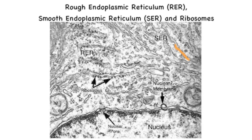Here we will identify eukaryotic cell structures from an electron micrograph. You can differentiate between the smooth endoplasmic reticulum and the rough endoplasmic reticulum because, although both are networks of tubules shown here in orange, the rough endoplasmic reticulum is associated with ribosomes, highlighted here in red. They are present on the electron micrograph as little black dots.